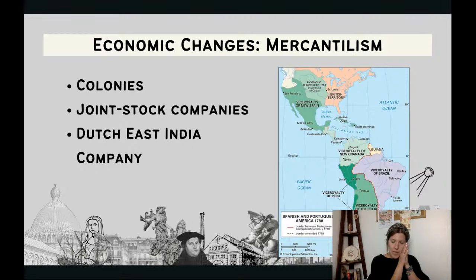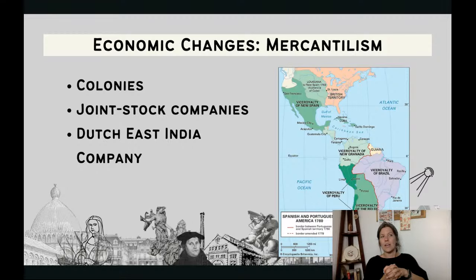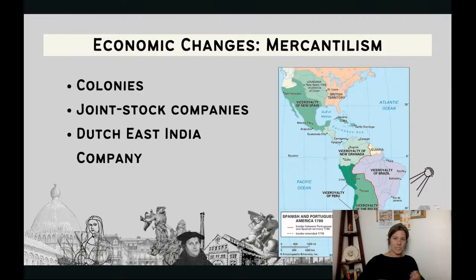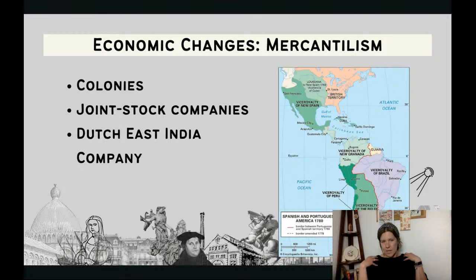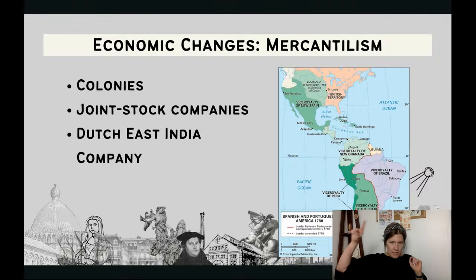Joint stock companies became important in England and the Dutch Republic. They are ways that people can go in together to fund a voyage so that if it fails, you're not totally out of all your money because you shared the expense with someone else. But if it's successful, you all reap the benefits. The Dutch East India Company — which we talk more about in Unit 3 — is the wealthiest company ever to have existed in all of world history because of its control of trade in Southeast Asia.